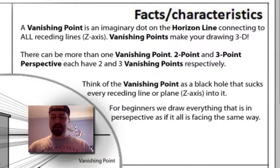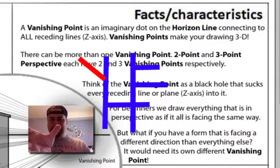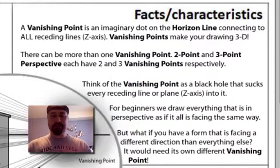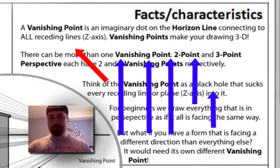But what happens if you have an object where you've got all these cubes, but one of them might be tilted slightly? Well, what do you do? It would need its own vanishing point just for it. So rule of thumb is if everything is facing the same direction, it all goes to the same vanishing point. If one thing is facing a different direction, then it needs its own vanishing point.